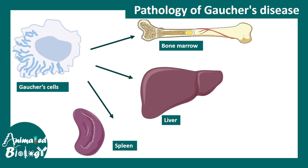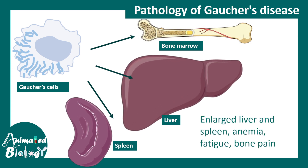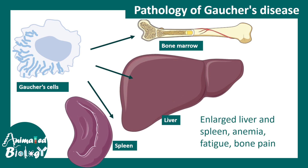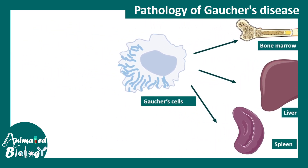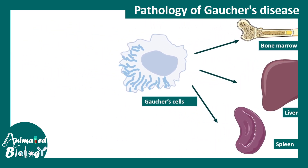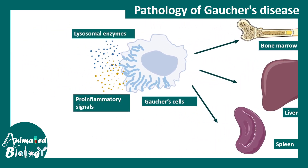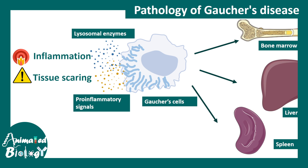Eventually this leads to an enlargement of the spleen and the liver. Also, Gaucher cells can secrete lysosomal enzymes and pro-inflammatory cytokines, which can evoke inflammation and tissue scarring — especially scarring in the liver and spleen — leading to several metabolic defects.